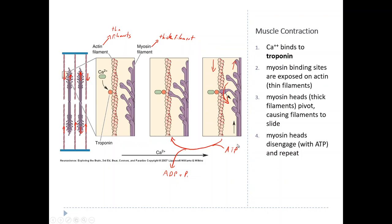This process continues as long as ATP is present and calcium is present to keep troponin out of the way. As soon as calcium goes away — which happens when the muscle fiber is no longer depolarized — the sarcoplasmic reticulum pulls calcium back out of the cytosol, and calcium is also pumped back into the extracellular fluid. Calcium concentration drops quickly, troponin is released and returns to block the myosin binding sites on actin, which allows the thick and thin filaments to slide past each other again — the muscle relaxes.